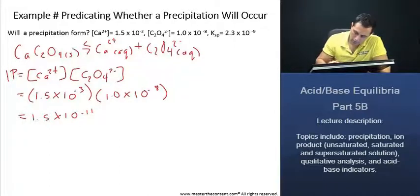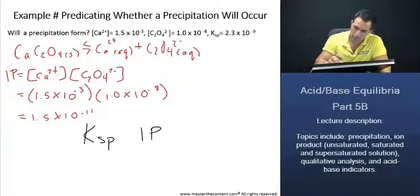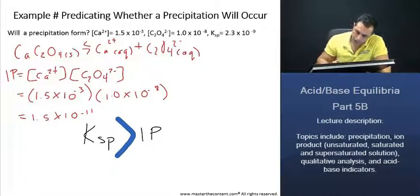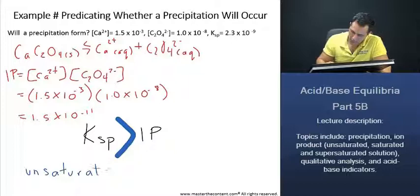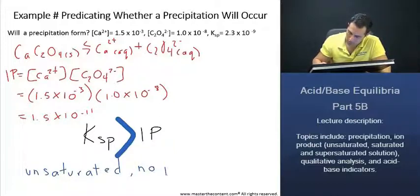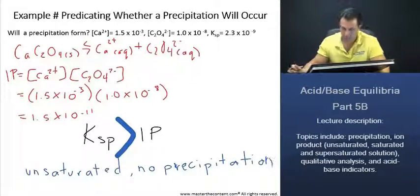Now, because our solubility product is actually going to be larger than our ion product, this solution will be unsaturated, firstly, and secondly, there will be no precipitation.